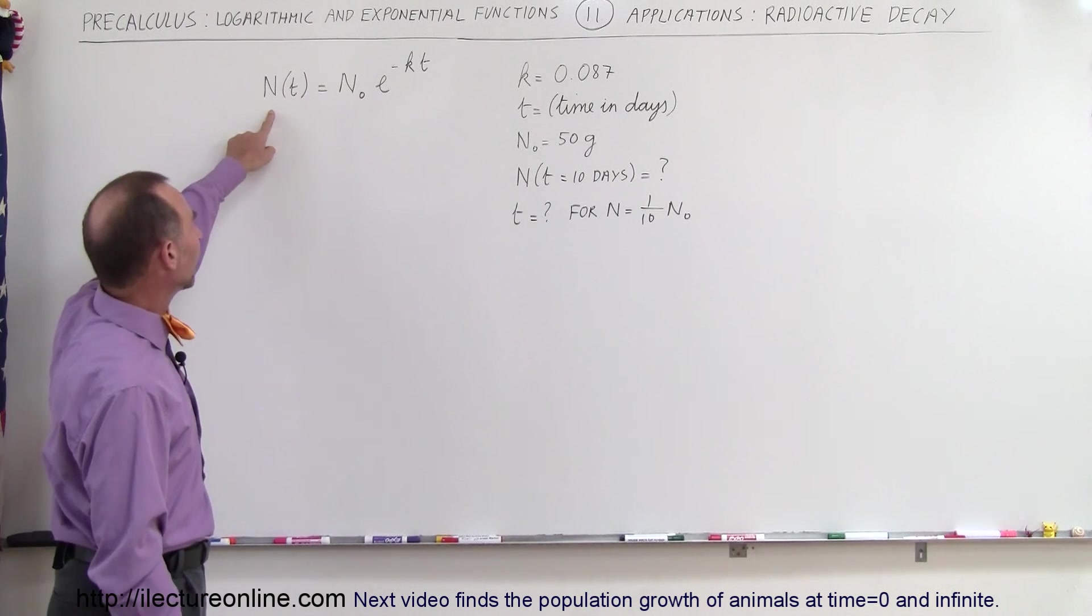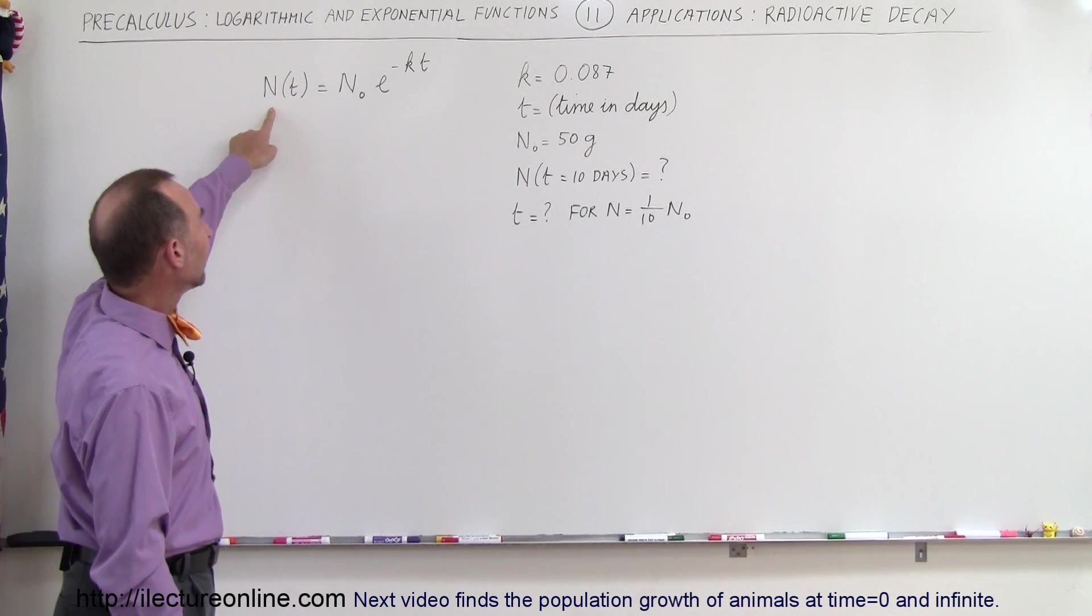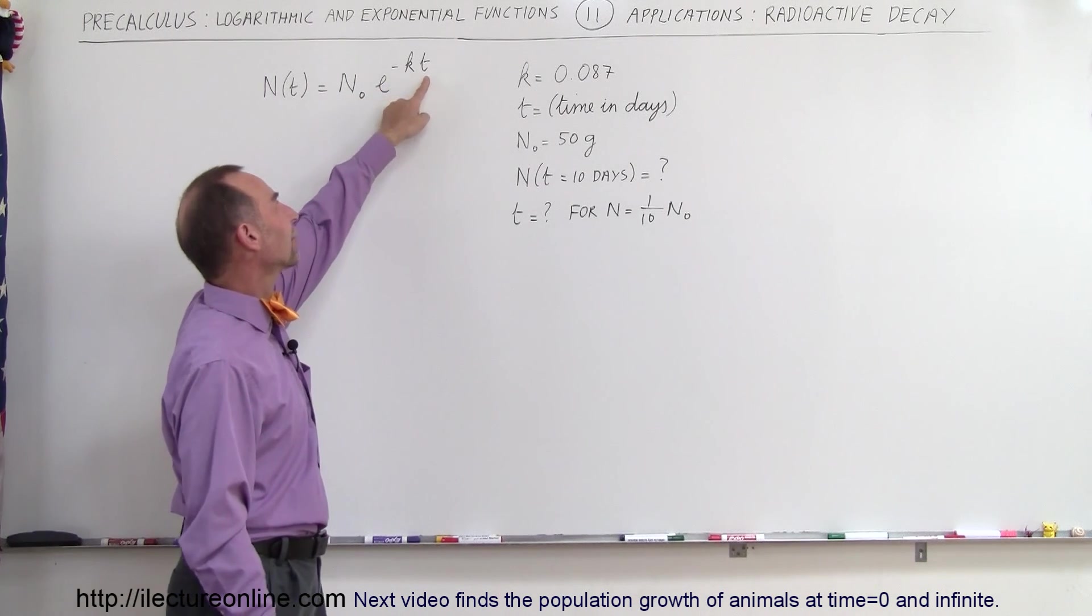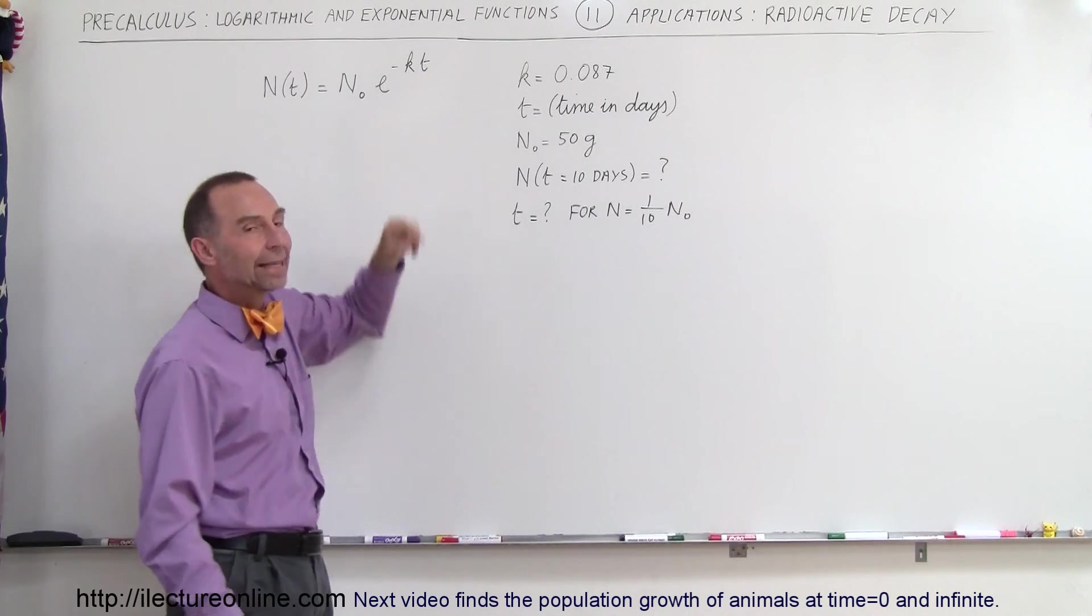The equation we use for that is that the amount that we end up with is equal to the initial amount we started with times e to the minus k times t. t stands for time, and k is the constant, the decay constant.